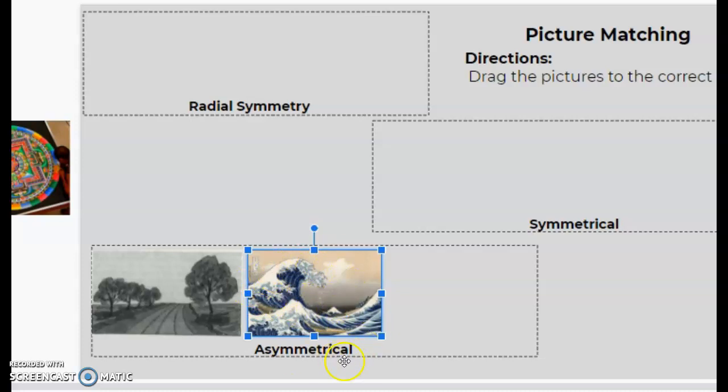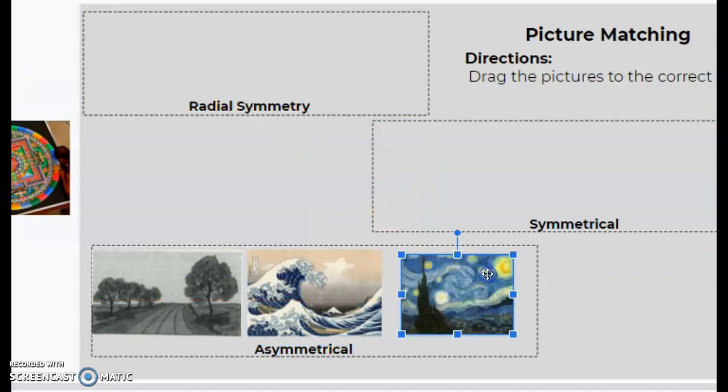If I divide this down the middle, there's a big wave over here and there's no big wave over here, so it's not the same on both sides, therefore it's asymmetrical. Same goes for Vincent van Gogh's Starry Night. There's a big building or something over here, and then there's nothing on this side. Well, there's lots of things, but lots of little things. Still balanced, but it is not symmetrical.